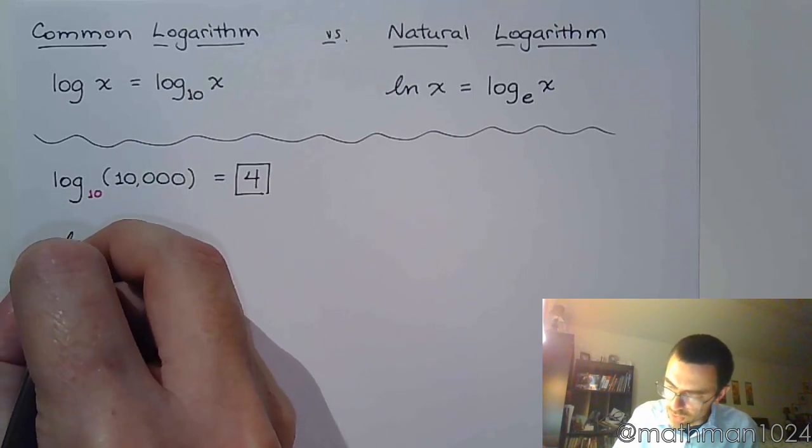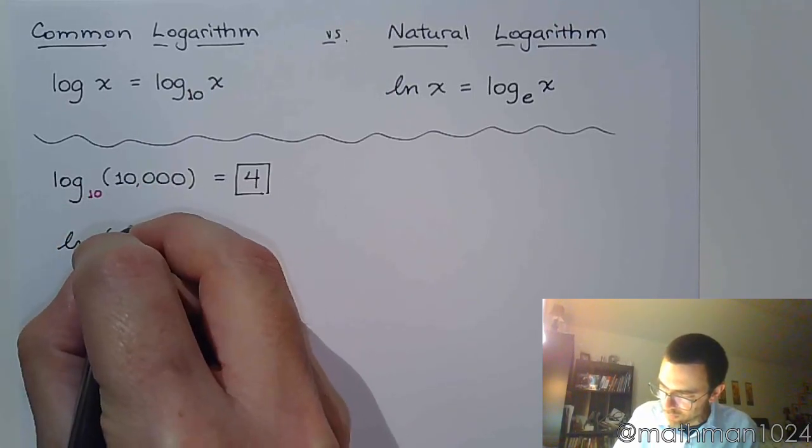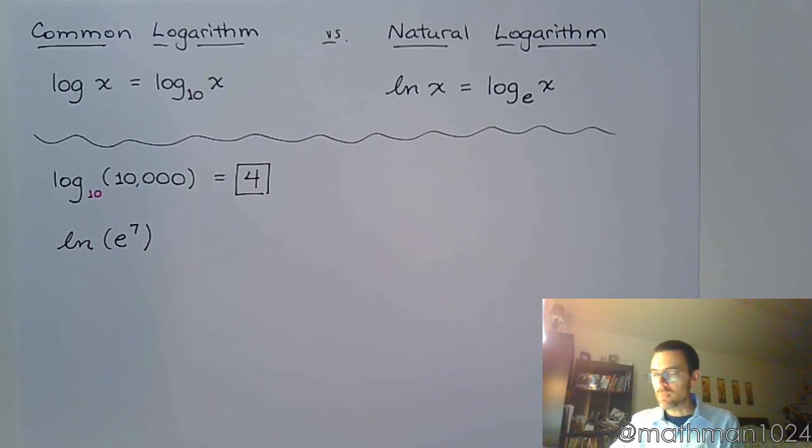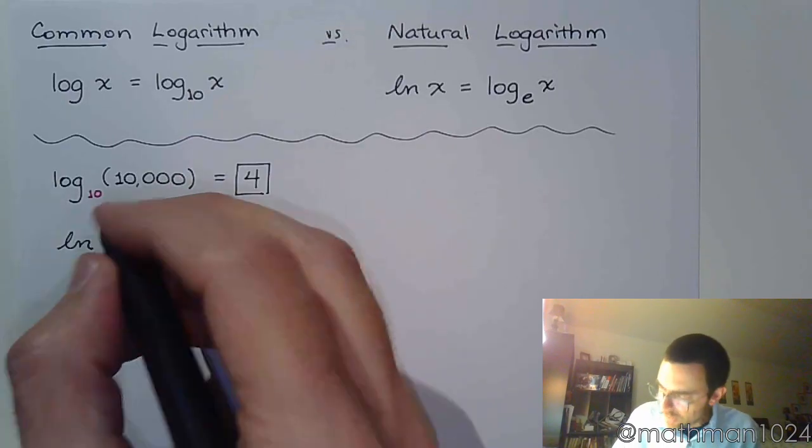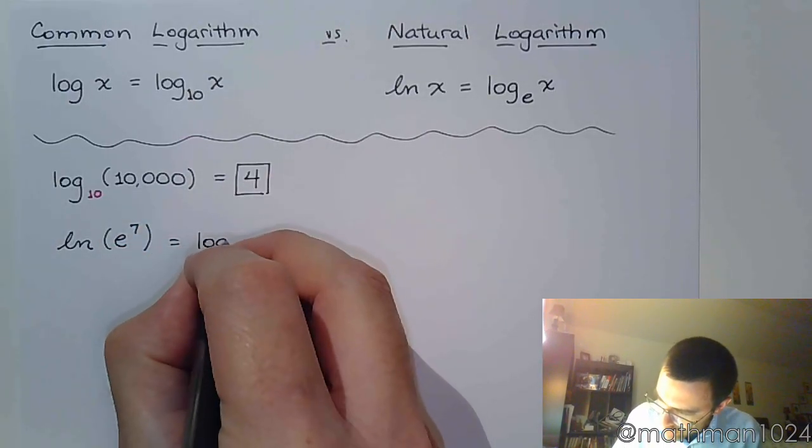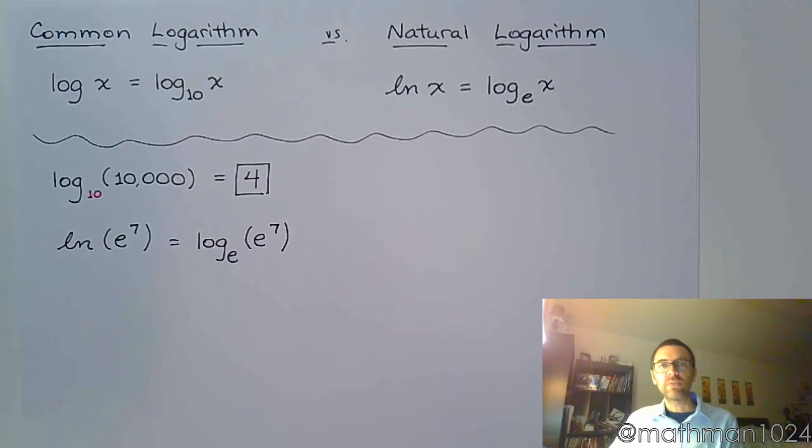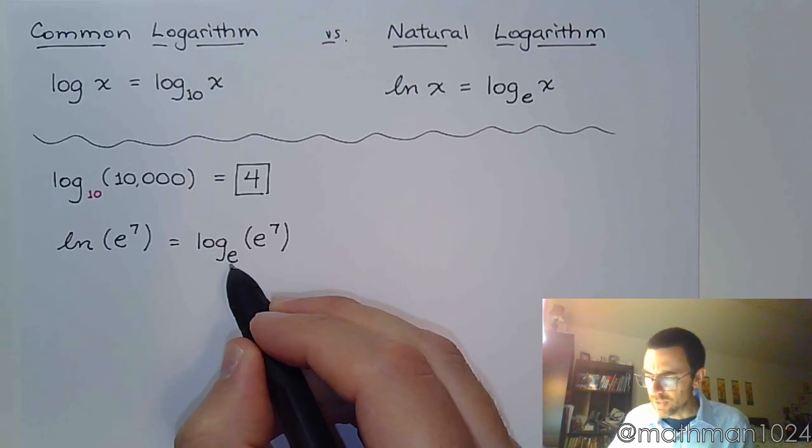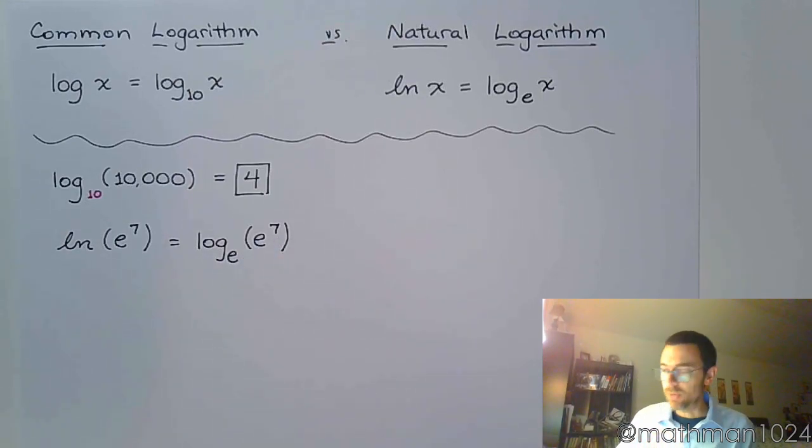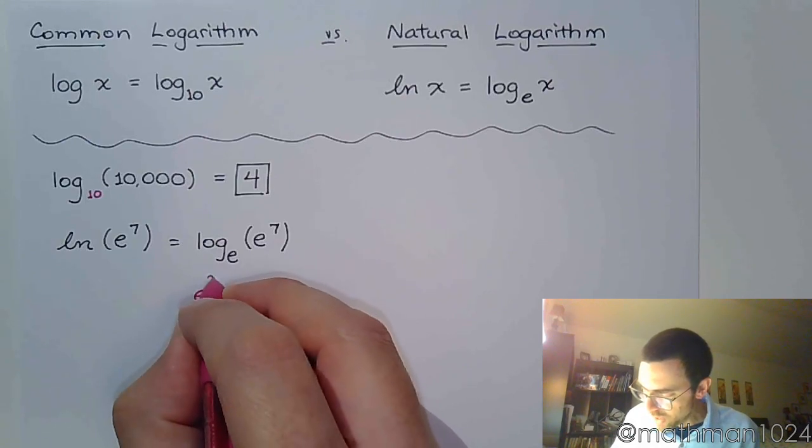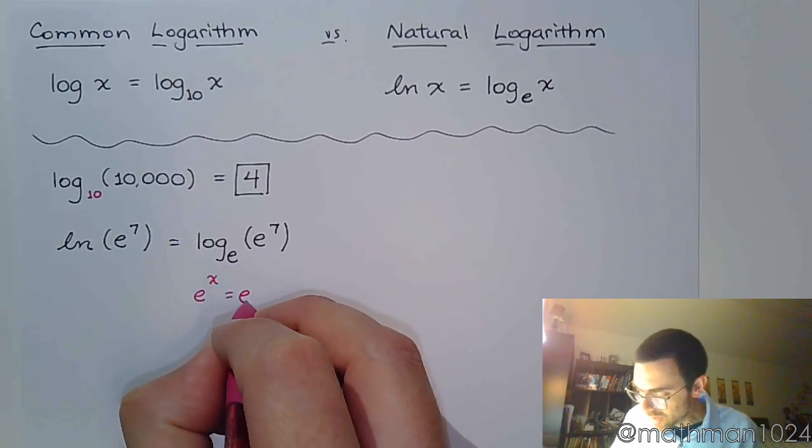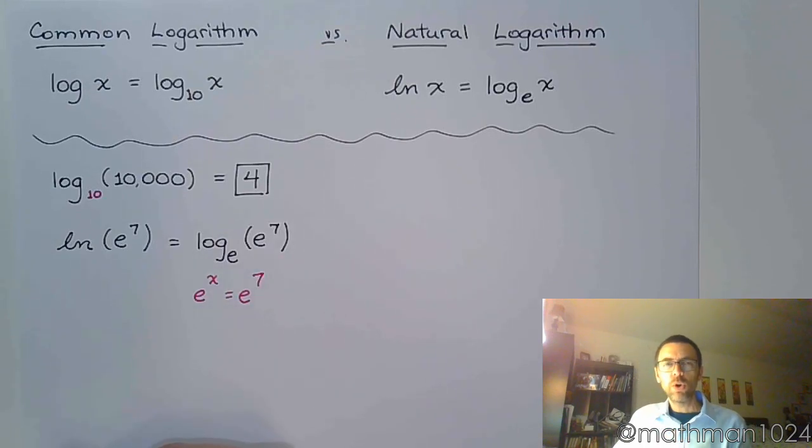If I were to do the natural log of e to the seventh - well, understand that this means log base e of e to the seventh. Now, we're going to get into this a little bit later in the next video, but think about this. e to some power has to equal that. So if you were to write an exponential equation, this e raised to some power has to equal what's inside the logarithm, which is e to the seventh.